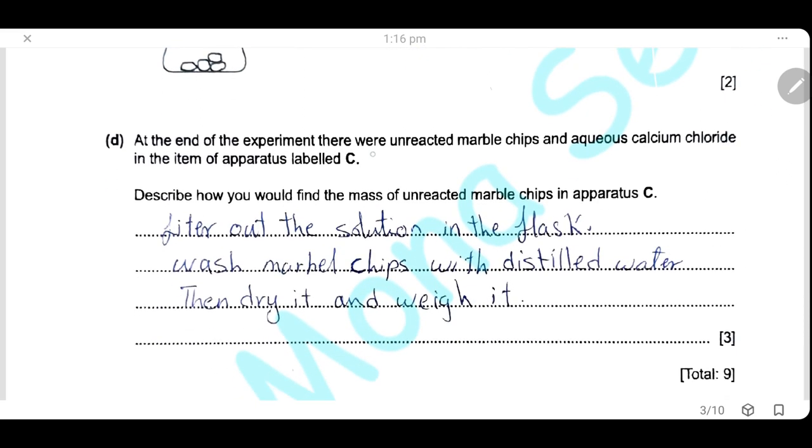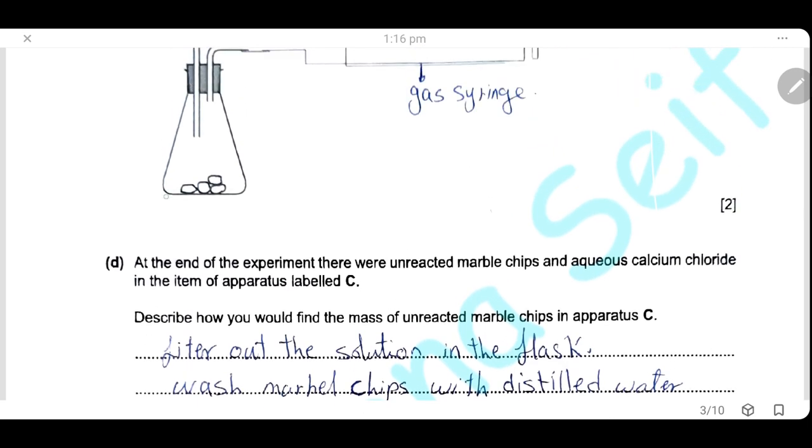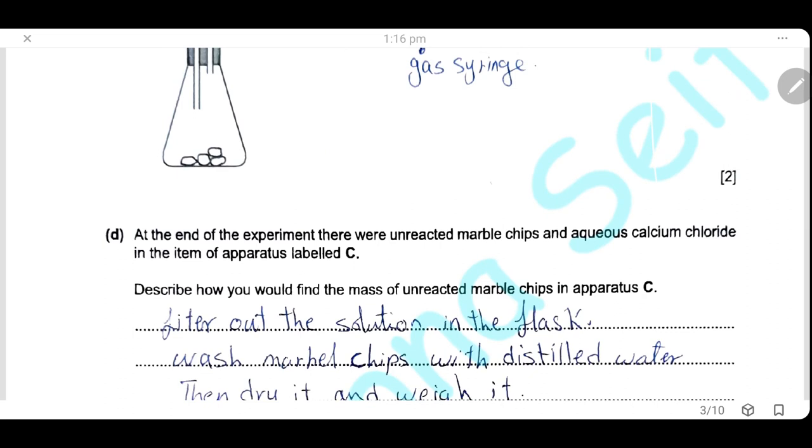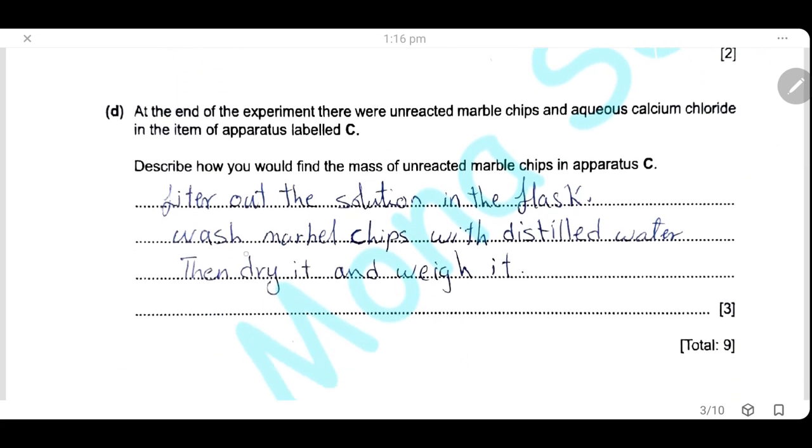At the end of the experiment, there were unreacted marble chips and aqueous calcium chloride in the item of the apparatus labeled C, the conical flask. Describe how would you find the mass of the unreacted marble chips. First, we will filter out the solution from the conical flask. Marble chips will be on the filter paper. Wash the marble chips with distilled water, then dry it and weigh it.